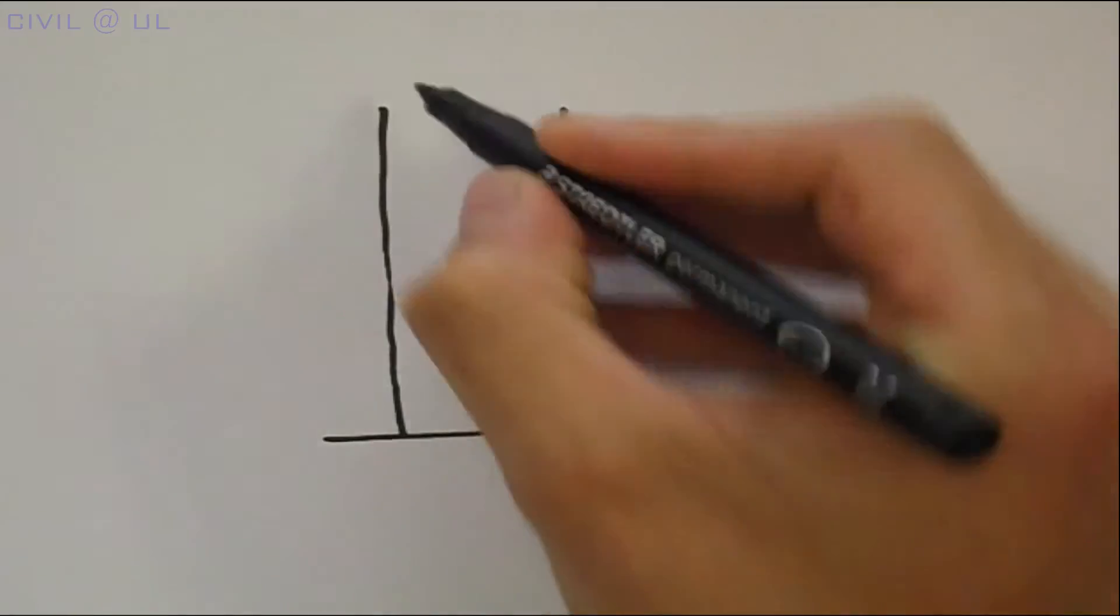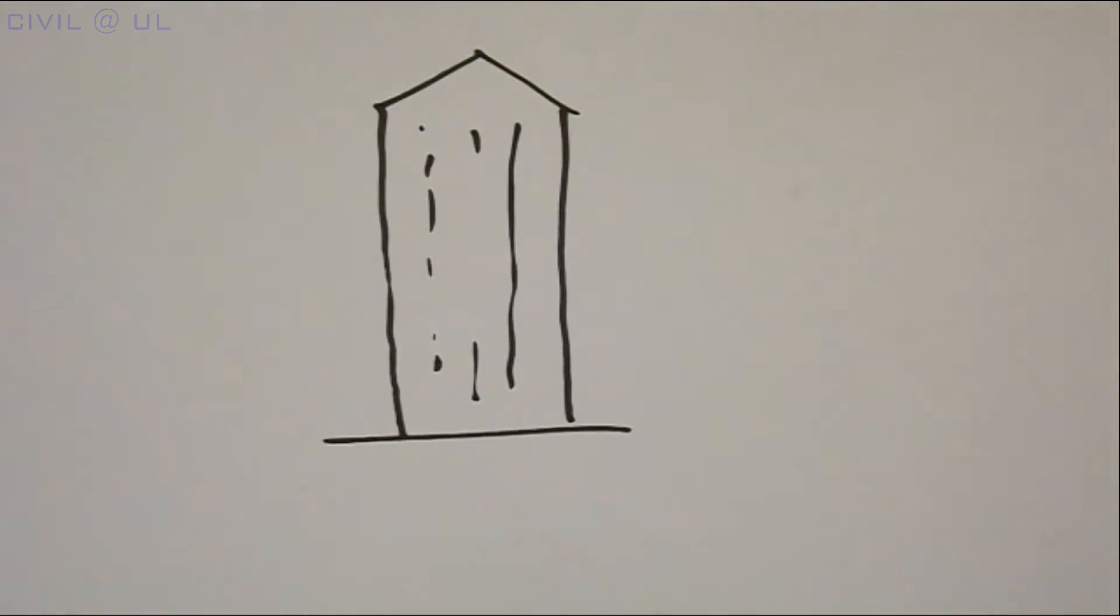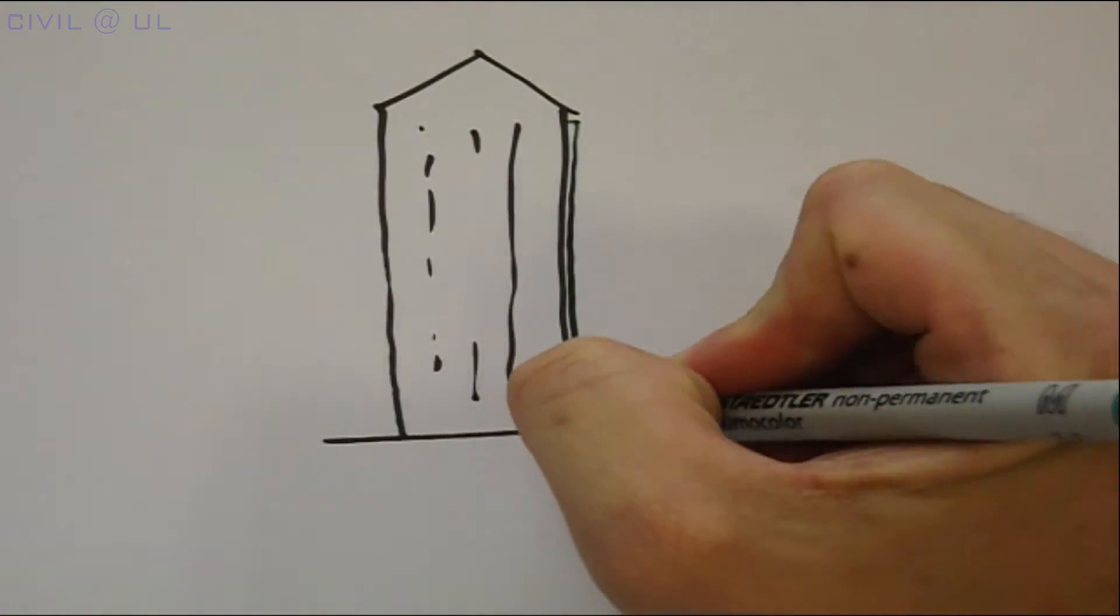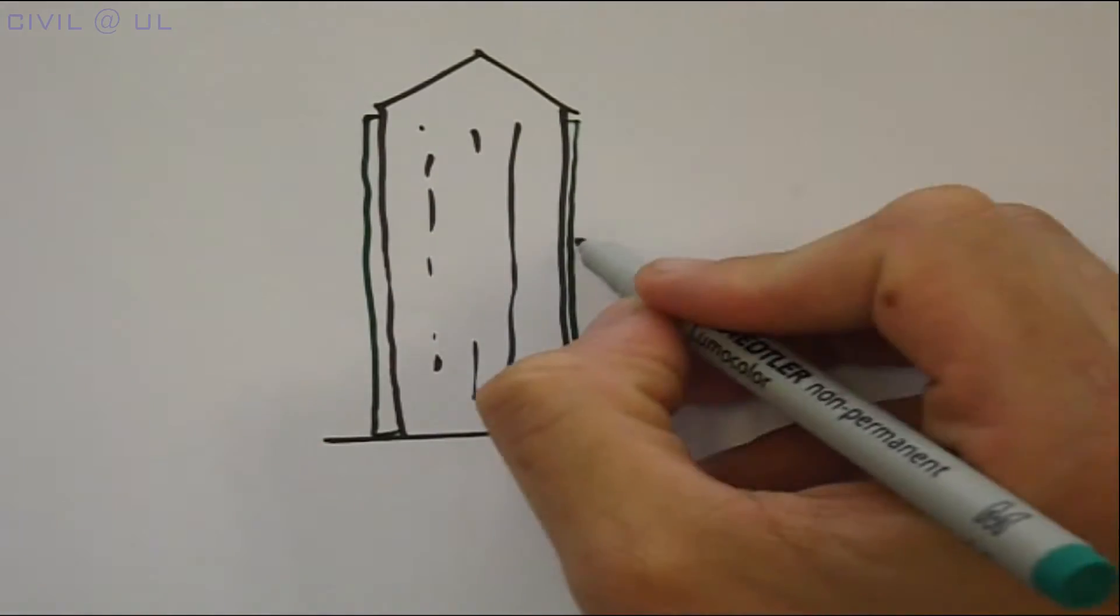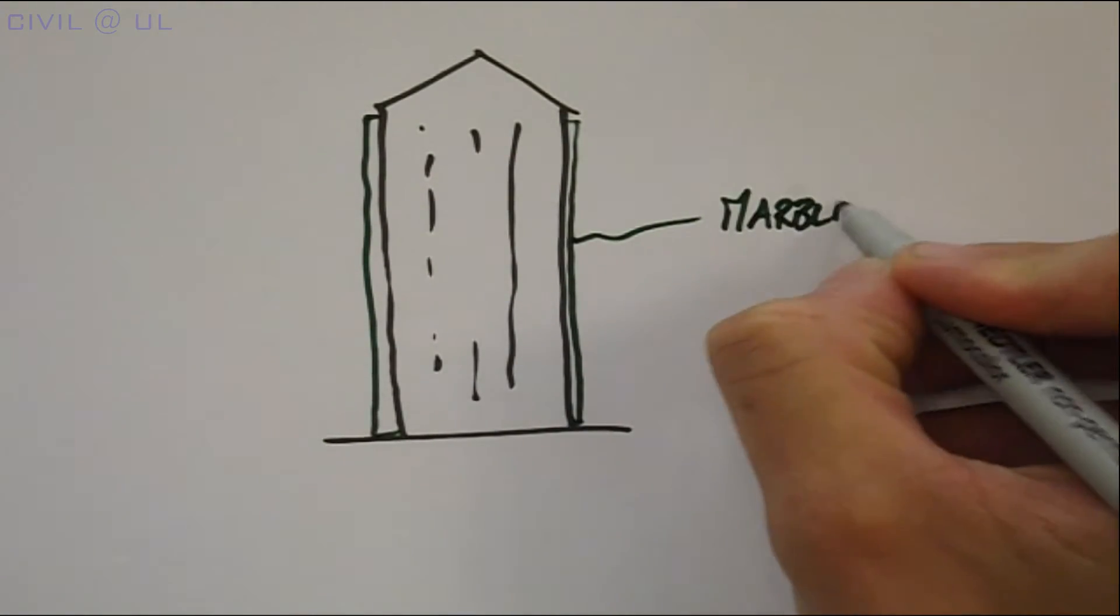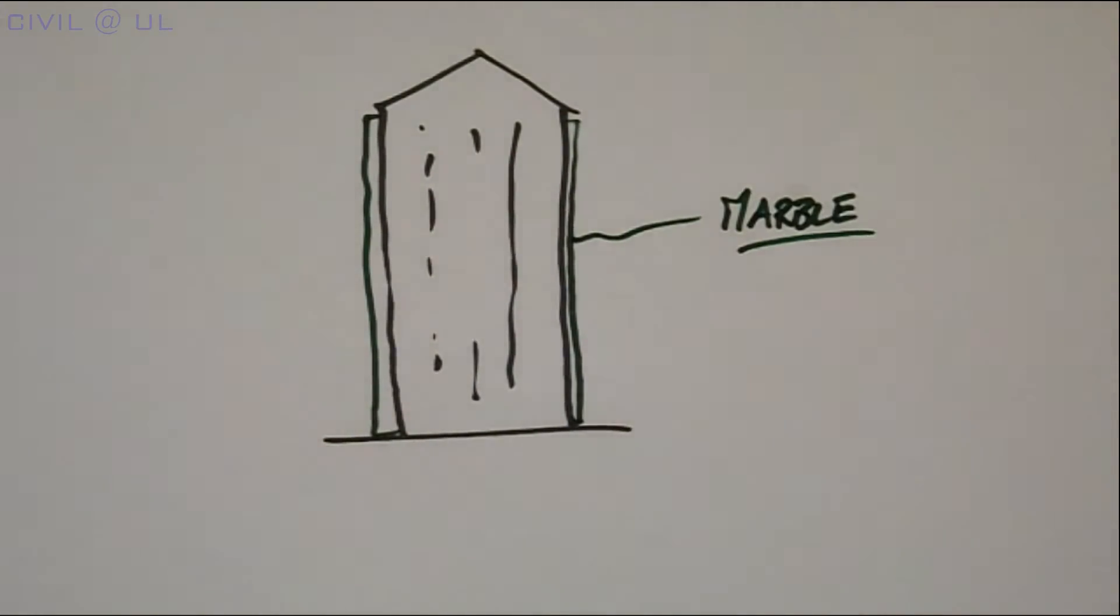Of course, nothing stays the same and these rocks in turn are subjected to different metamorphic processes, which, for example, turns limestone into beautiful ornate marble which clad so many of our buildings today.